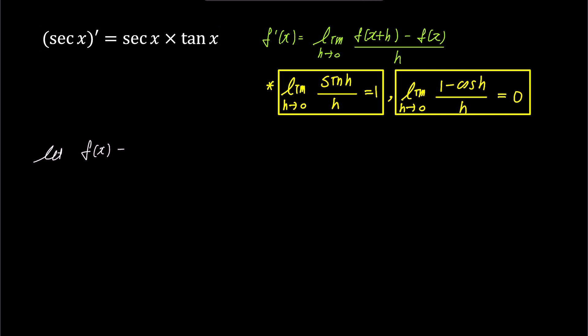Now, let's consider f of x as secant x. In that case, f of x plus h would be secant x plus h. Let's substitute these into the green formula above. The derivative f prime of x becomes the limit of secant x plus h minus secant x over h.